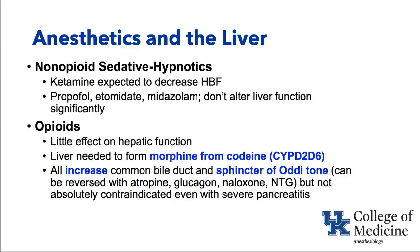Non-opioid sedative hypnotics like ketamine, propofol, etomidate, and midazolam don't have much significant effect on liver blood flow. Opioids also have little effect on hepatic function, but remember that some opioids need to be converted to their active form — codeine being an example where the CYP2D6 system converts codeine to morphine to make it an active analgesic. Also, opioids can increase common bile duct and sphincter of Oddi tone, causing constriction. When performing intraoperative cholangiograms, you would worry whether the contrast not getting through was due to opioid-induced constriction of the common bile duct or an actual retained stone.